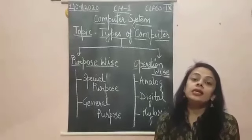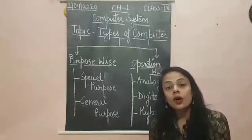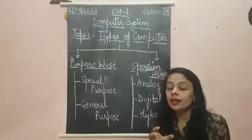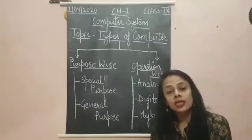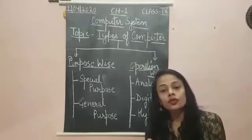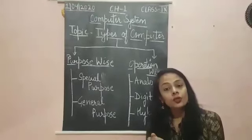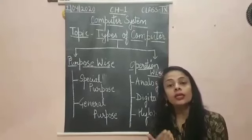That means digital computers work on digits and they work on digits that's why these computers use discontinuous data. It is used to process information with quantities. These computers work with quantities.